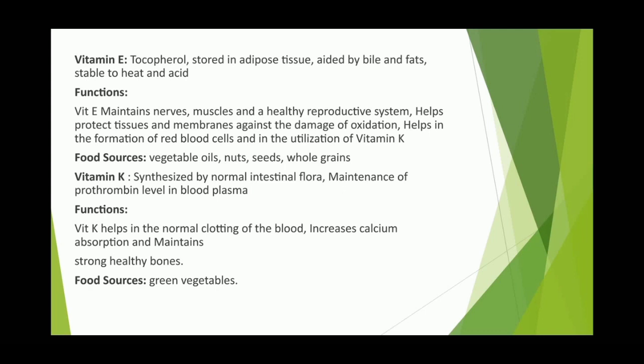Vitamin K is synthesized by the normal intestinal flora and maintains prothrombin levels in blood plasma. Functions: helps in normal clotting of the blood, increases calcium absorption, and maintains strong, healthy bones. Food source: green vegetables.